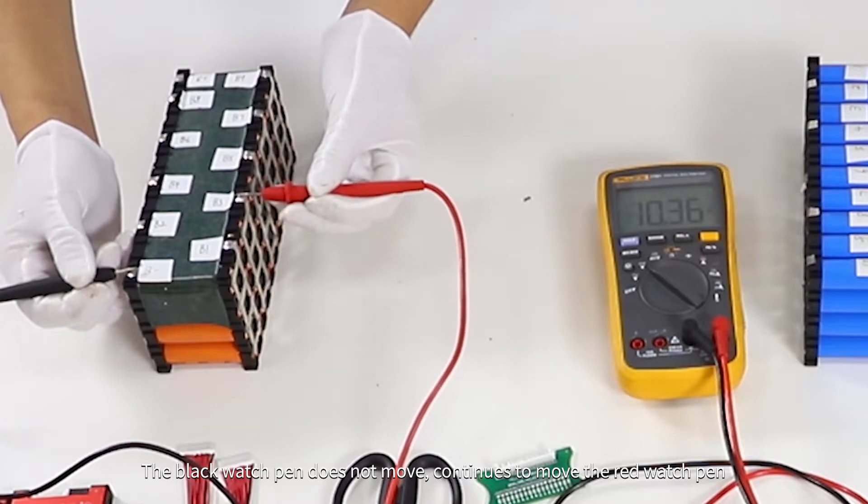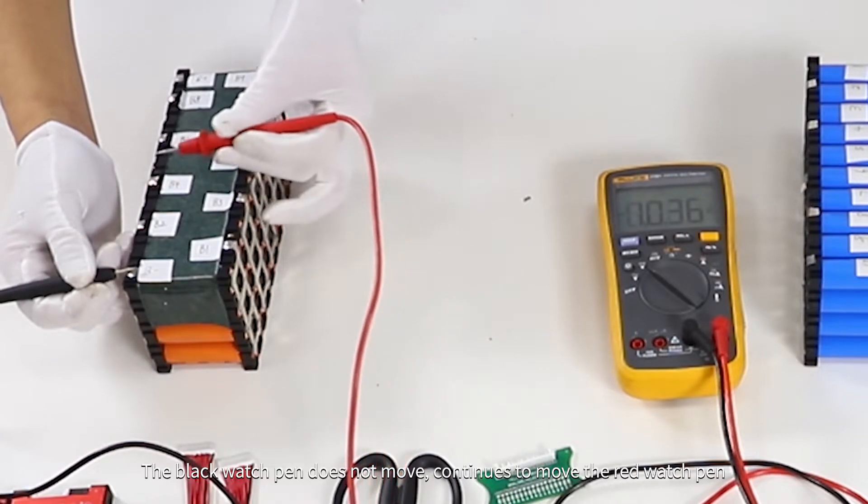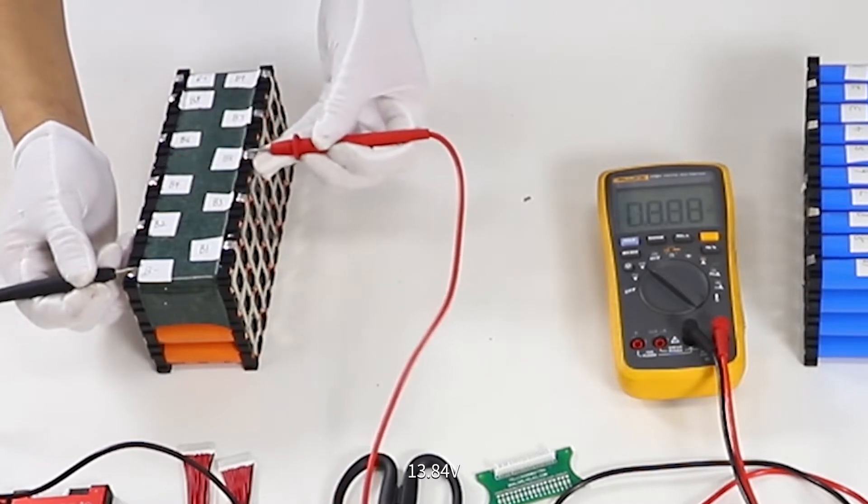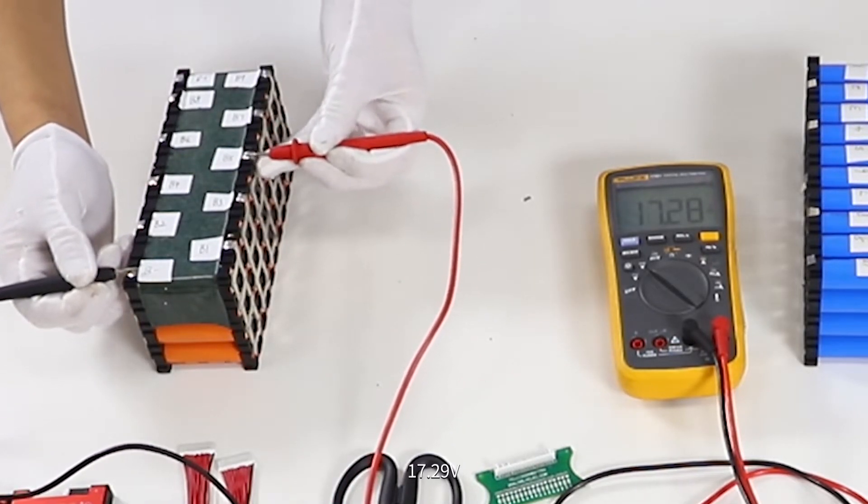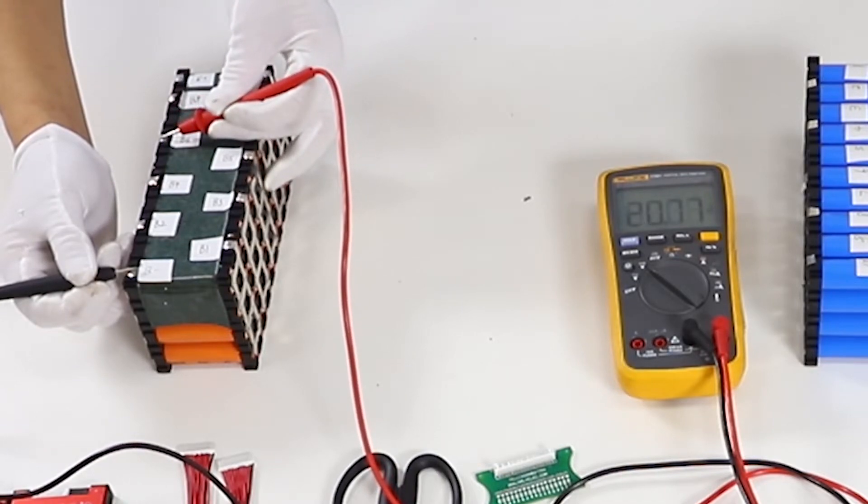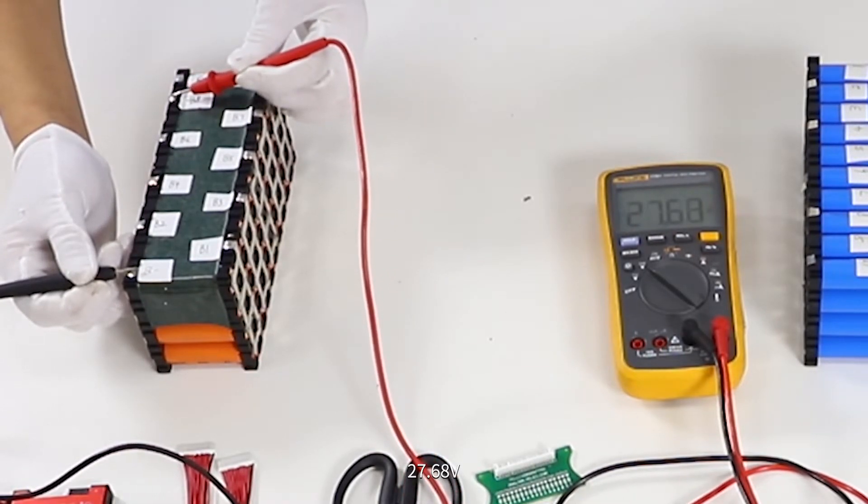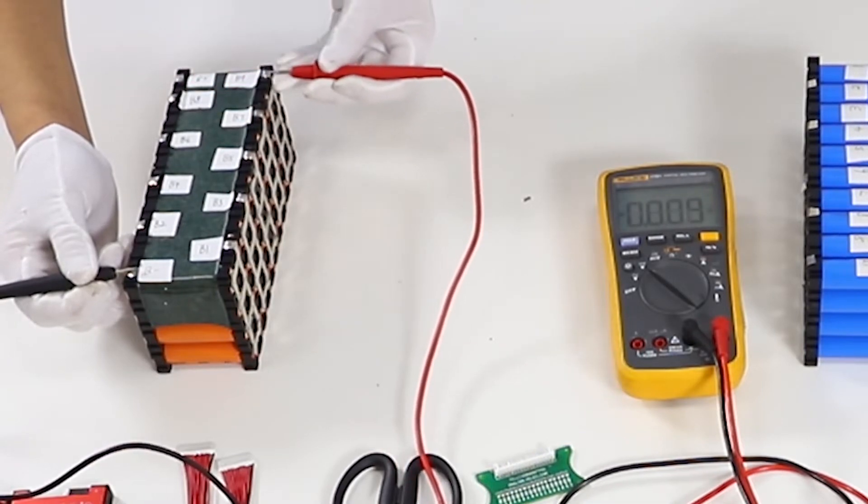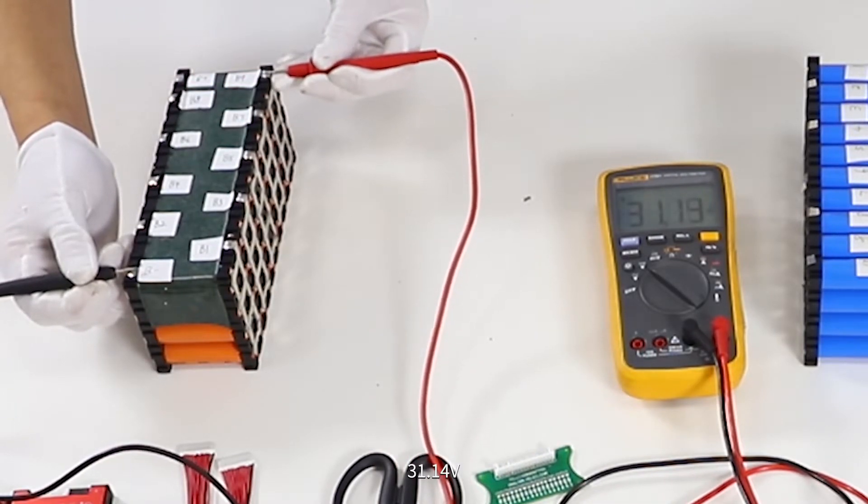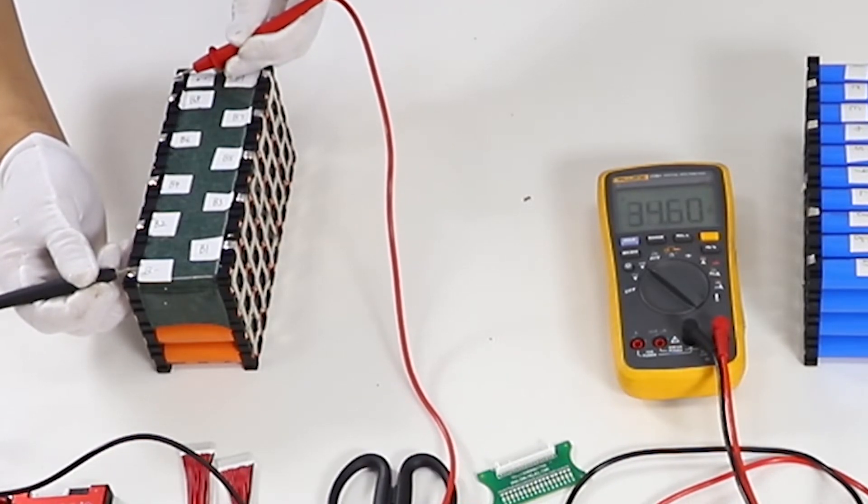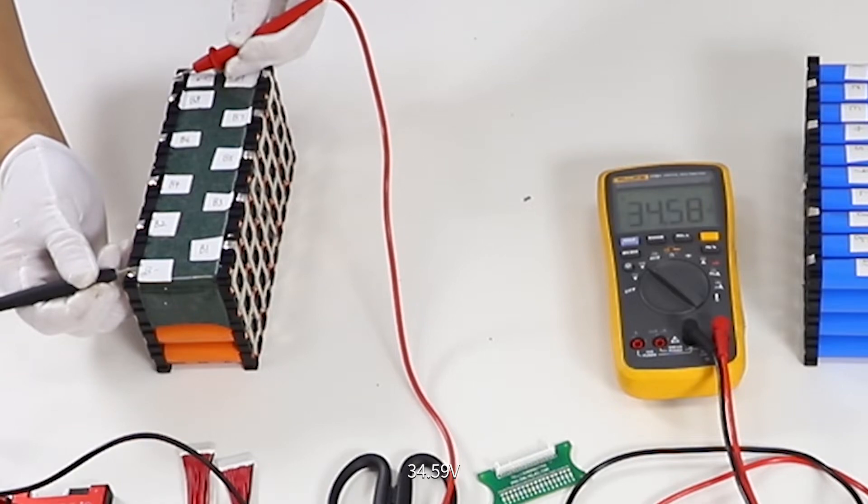The black watch pen does not move, continues to move the red watch pens: 113.84V, 117.9V, 120.75V, 124.21V, 127.68V, 131.14V. And now it's the last sampling point, B+: 134.59V.